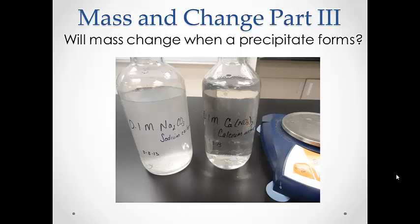In part three, we are going to begin with two different substances and mix them together. In this case, we will be using 0.1 molar sodium carbonate and 0.1 molar calcium nitrate. Calcium nitrate is a substance that is used in a lot of fertilizers, and sodium carbonate is commonly known as washing soda.